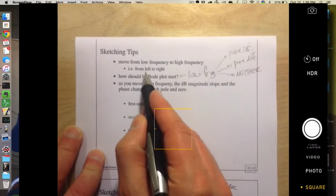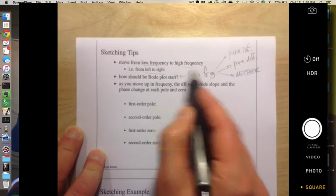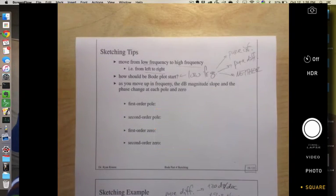So the key is to go from left to right, low frequency to high frequency. When you start out, ask yourself what is the low frequency behavior? Do I have a pure integrator, a pure differentiator, neither, a pure double integrator, or a pure double differentiator?